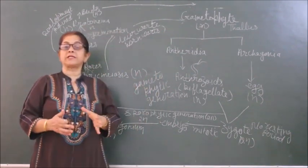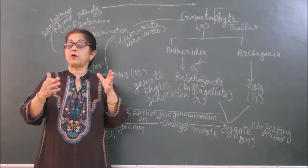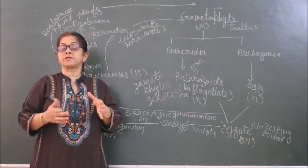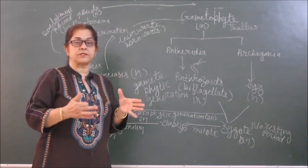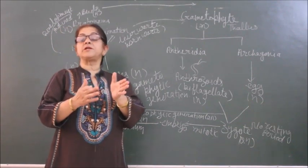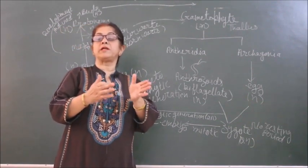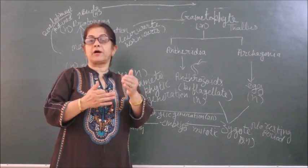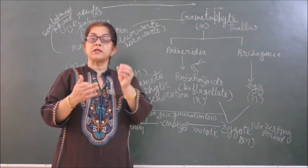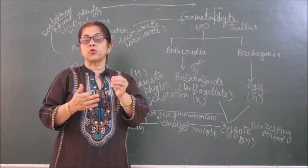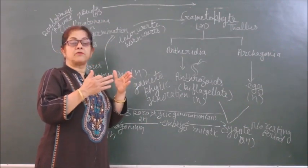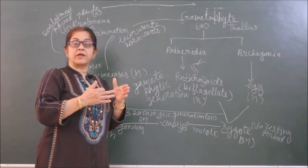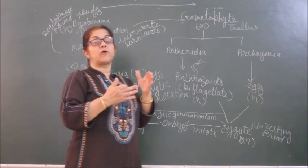In bryophytes, I had told you that avascular or we can say atracheophytes, thallus-like organization is present in case of bryophytes. And very little differentiation of roots, stem and leaves. A little advanced, or we can say in mosses, we can see a little bit of root-like, stem-like or leaf-like structure. Otherwise, they have thallus-like organization and most commonly found in moist, shady places.